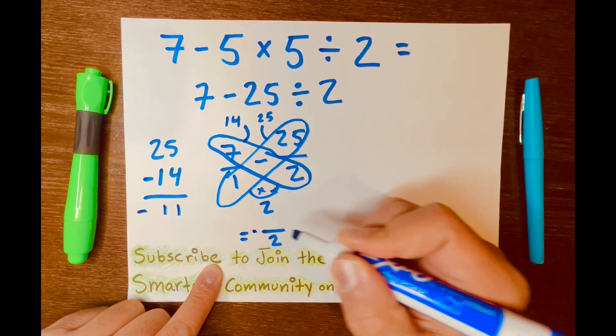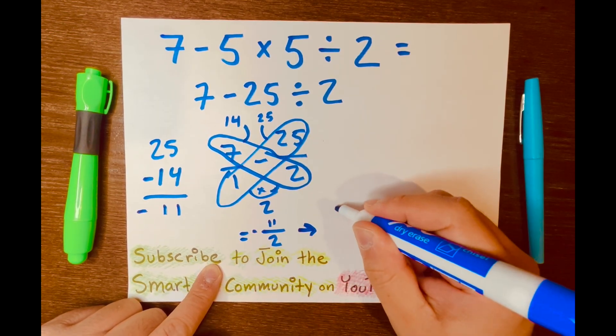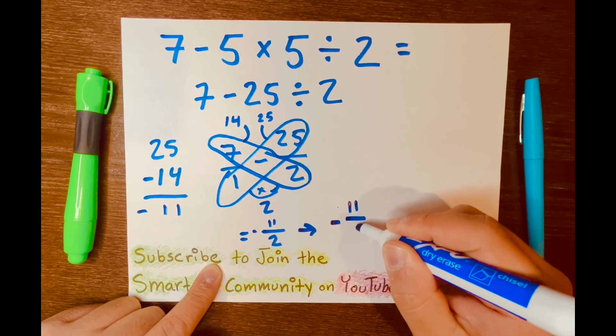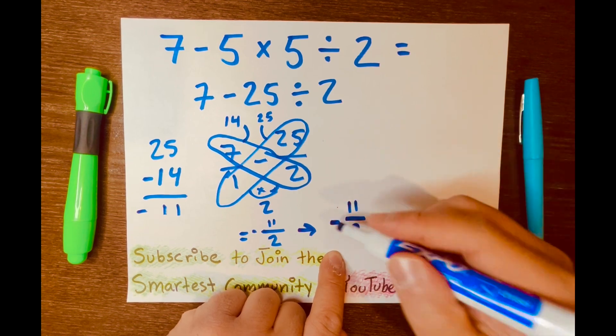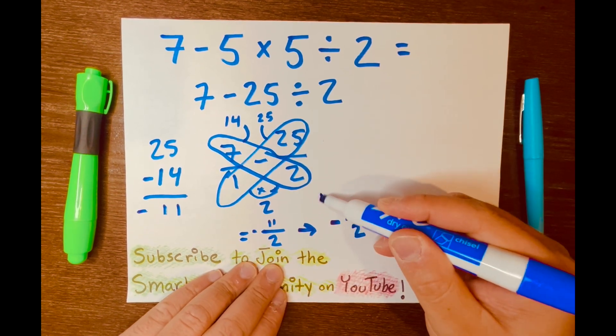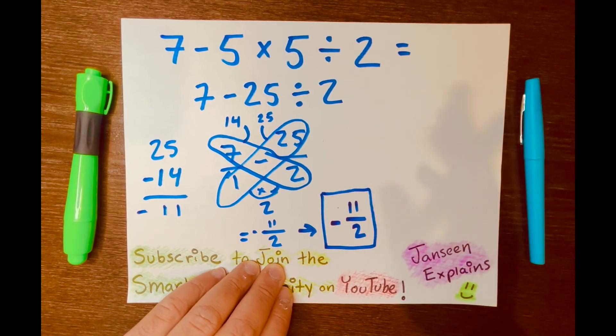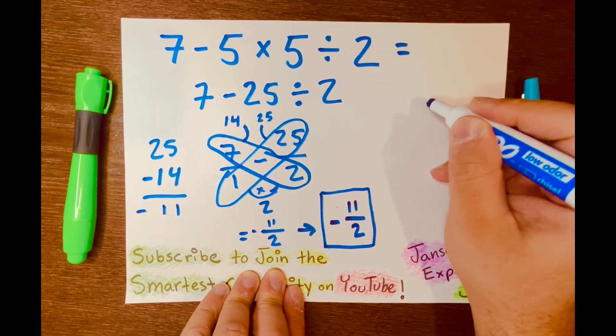So I'll write negative 11 there. And for space, let's write it a little bigger here. Negative 11 over 2. Let's get a decimal answer and a mixed number answer. Right now, we have an improper fraction answer. So that's the first answer. We need two more answers, two different answers. Let's use long division to solve those two.